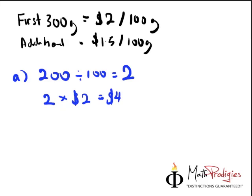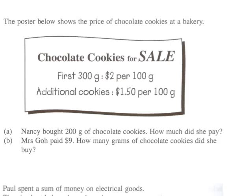2 sets. 2 times $2 is going to give you $4. And that is actually the answer for part A. So how much did she pay? She paid $4.